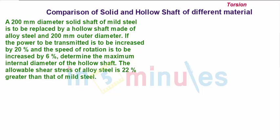The problem statement is: a 200 mm diameter solid shaft of mild steel is to be replaced by a hollow shaft made of alloy steel with 200 mm outer diameter.